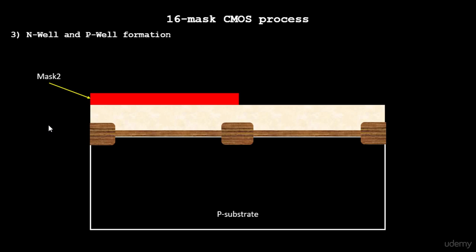Now we have mask 2. The next step is to expose this photoresist to a UV light. So the same thing happens. The light doesn't react with the resist under this area, it only reacts with the area which is exposed.